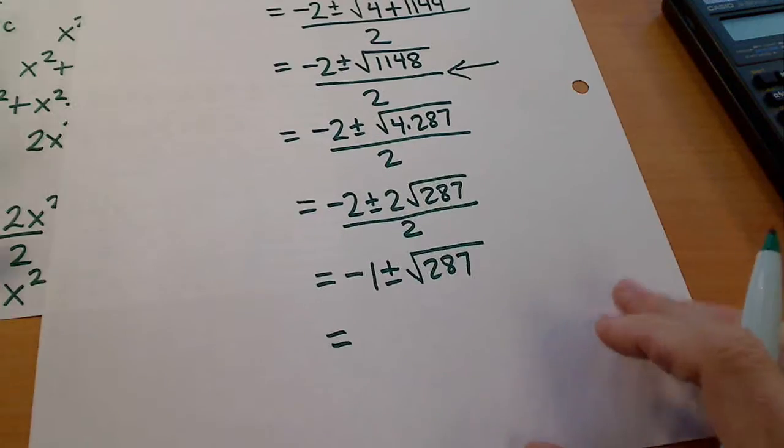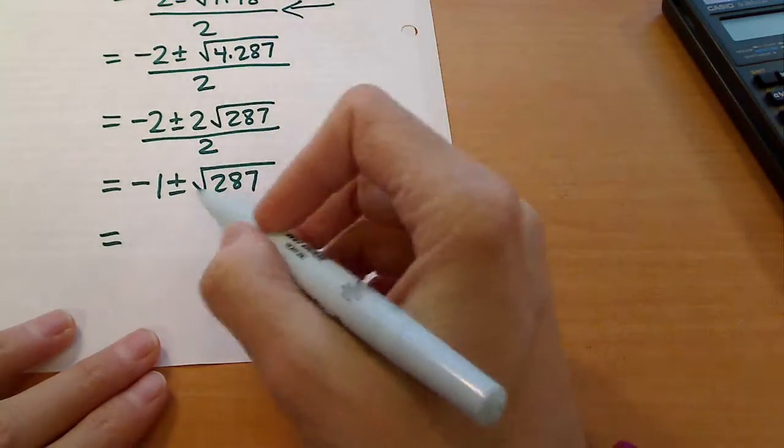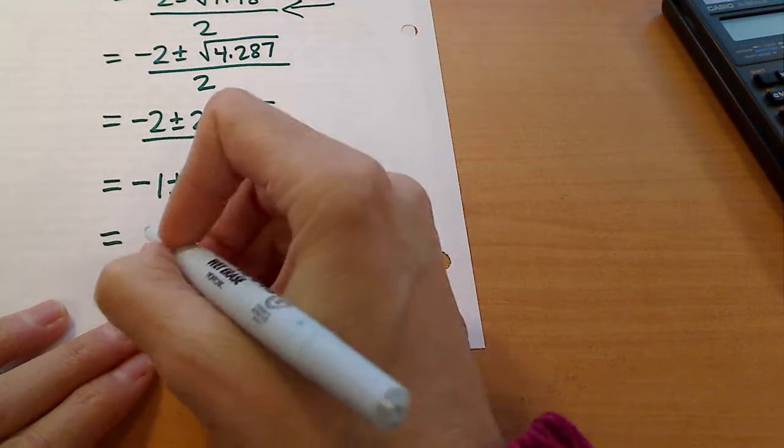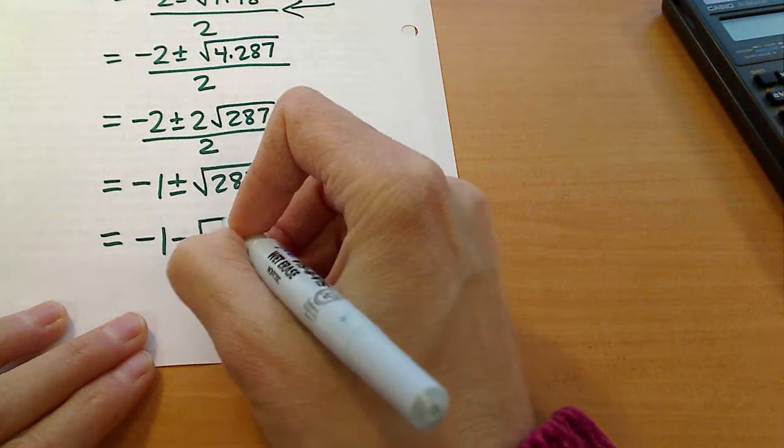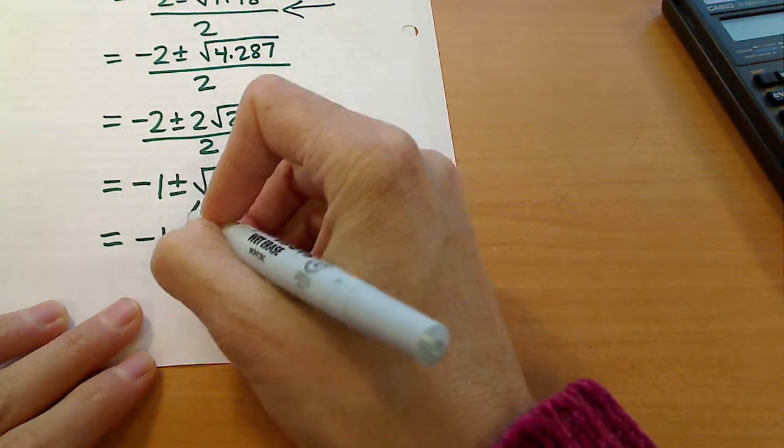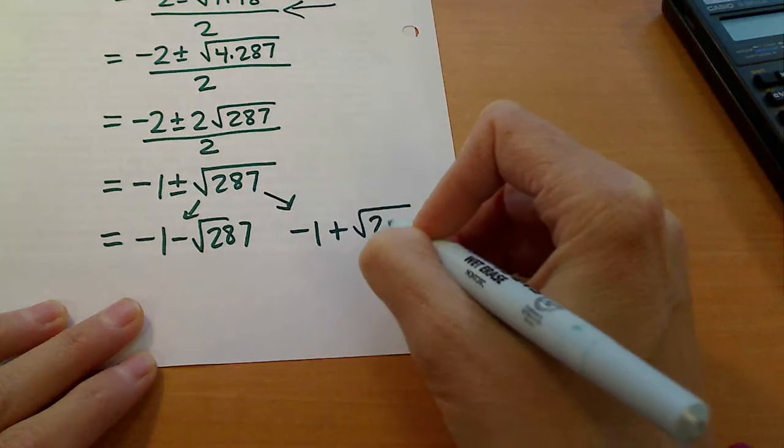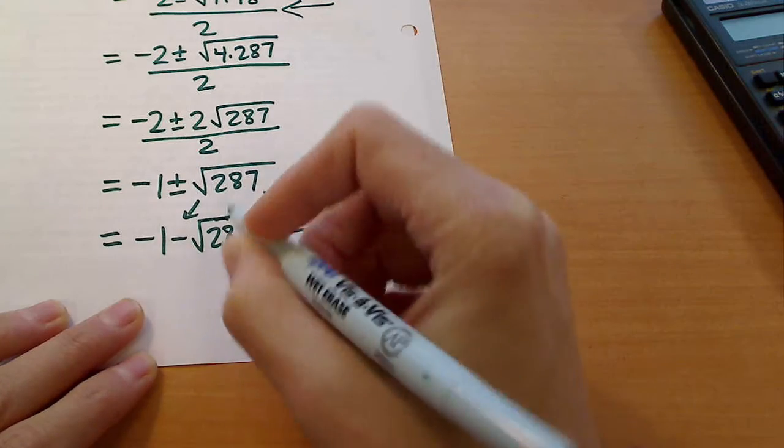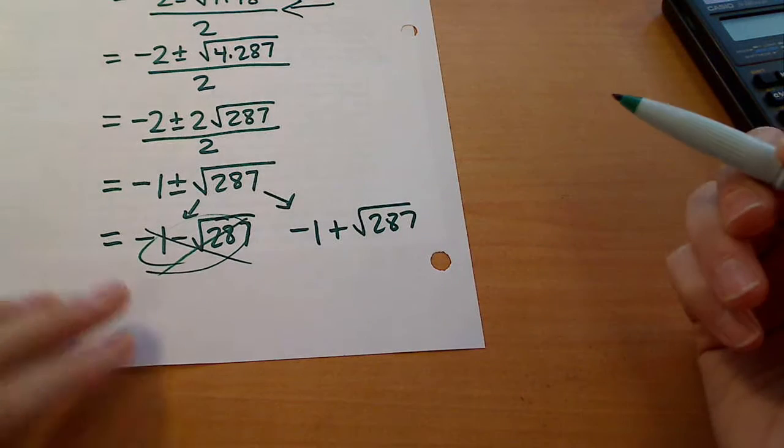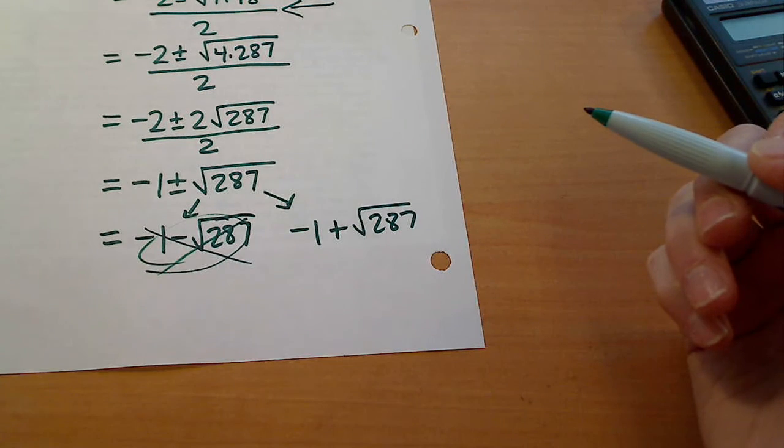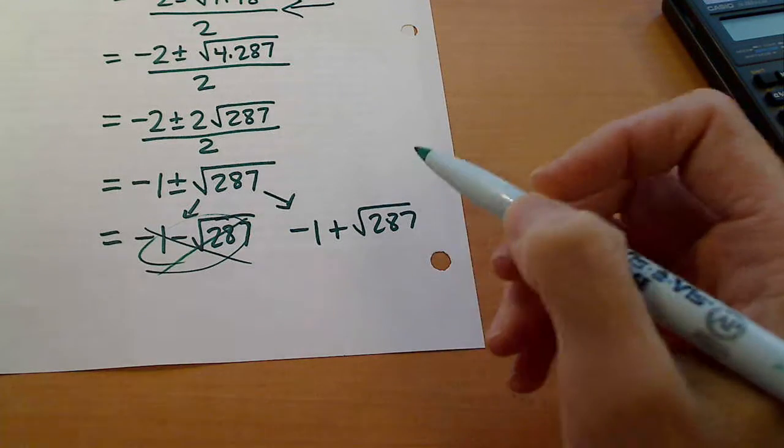Because we're talking about lengths on a triangle, the negative isn't going to make any sense here because this is really two different answers. This is negative 1 minus the square root of 287, and it's also negative 1 plus the square root of 287. This one right here is going to give us a negative value. That doesn't make any sense in the context of it being a side on a triangle, so I'm just going to eliminate that one and work with this one right here.